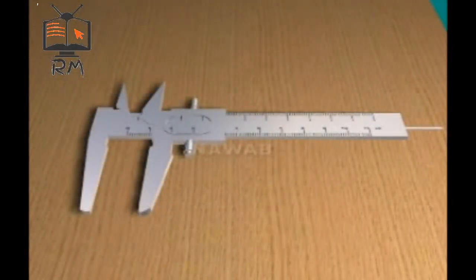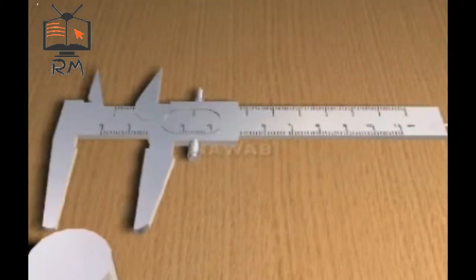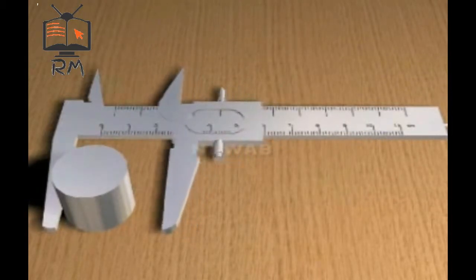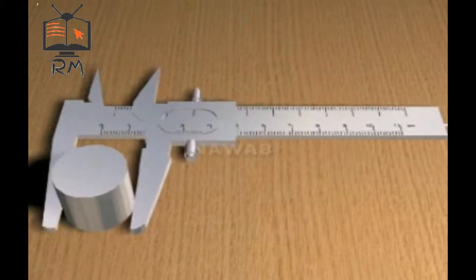Vernier Calipers. In physics, we need to measure smaller objects more accurately, such as the radius of a small sphere or a cylinder. For such measurements, we use Vernier Calipers.